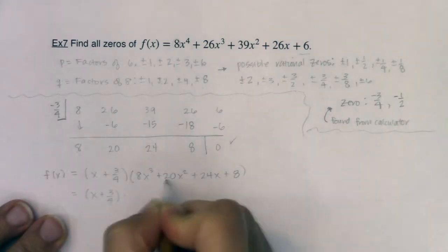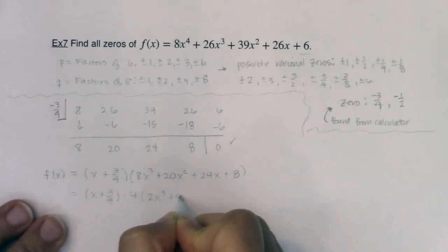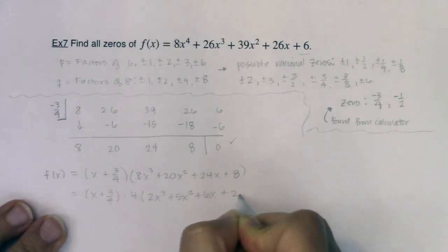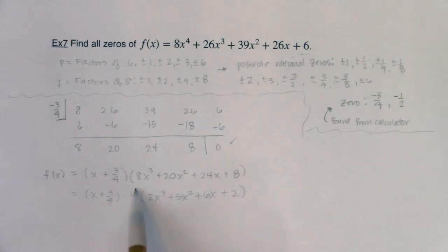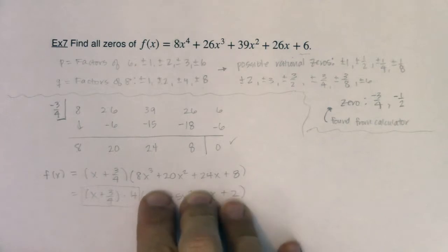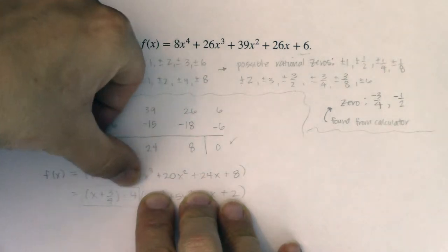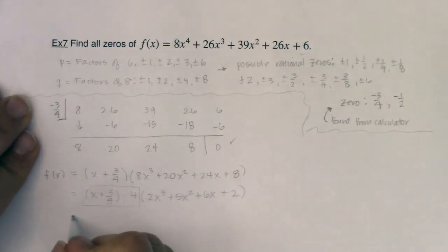If I factor out a four from this polynomial, I would have 2x³ plus 5x² plus 6x plus two. Make sure you believe me so far because the next part's about to blow your mind. This no longer has a GCF, but because this has a fraction, I can opt to multiply these two terms together. If I multiply (x + 3/4) by four, I distribute the four to the x and to the three fourths — the fractions disappear. So I'm going to have four x plus three, times 2x³ plus 5x² plus 6x plus two.